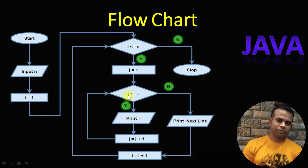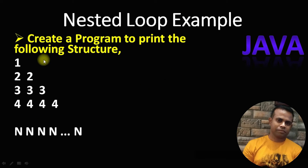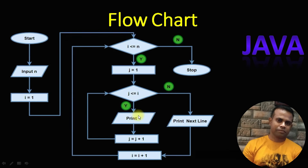We used j previously because each line printed a sequence of numbers — first line 1, second line 1 2, third line 1 2 3. But today's statement is different: first line prints 1, second line prints 2 2, third line prints 3 3 3. So for each iteration of the outer loop, we take that value, iterate the inner loop that many times, and print the outer iteration number i.